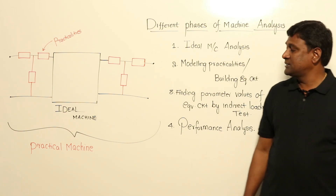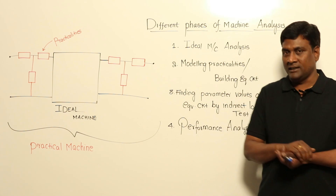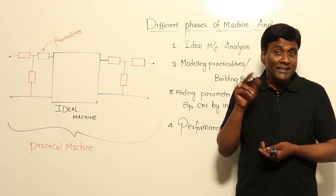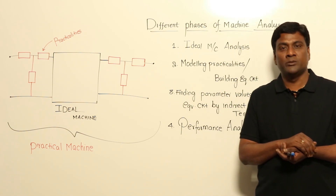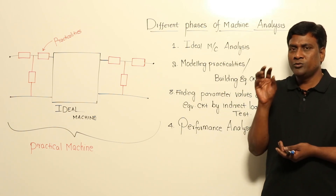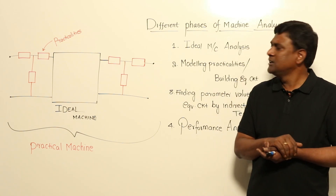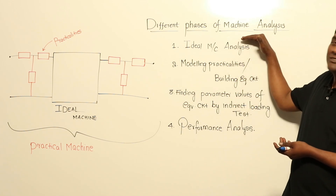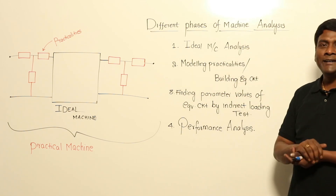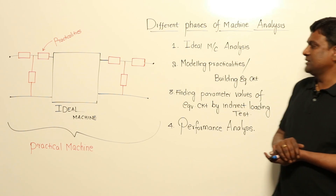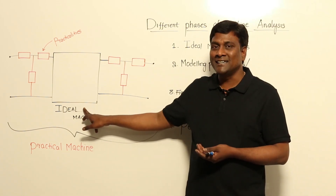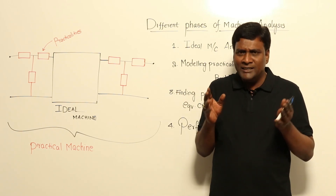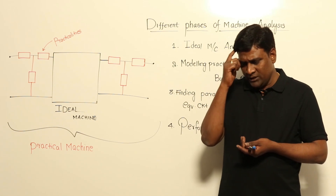In this session, let us try to understand the different phases of machine analysis. We discussed that in an indirect way we are trying to find out the performance characteristics. So in order to find any performance characteristic in an indirect way, we should understand the machine. The first phase is ideal machine analysis — a machine is considered in its purest form.